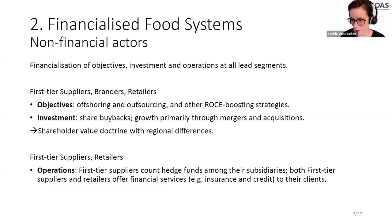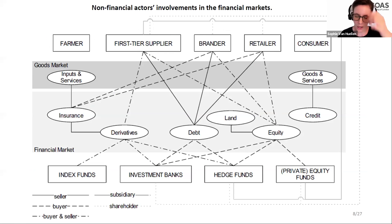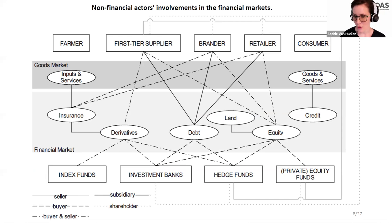Financialization of operations is where the lines between financial and non-financial corporations become increasingly blurry. Some first-tier suppliers now count hedge funds and other financial institutions such as banks among their own subsidiaries, and both first-tier suppliers and retailers offer financial services to their clients — including insurance, risk management, and credit provision — to consumers as well as other actors in the food system.